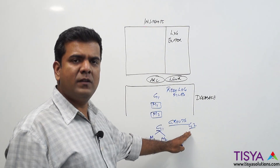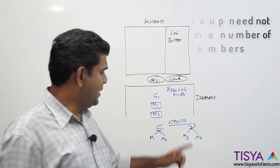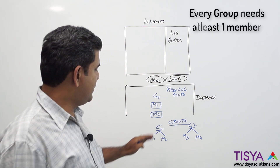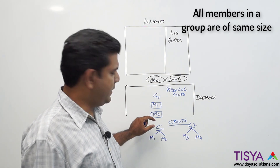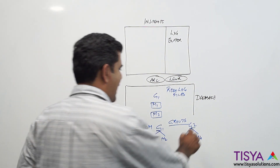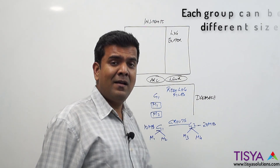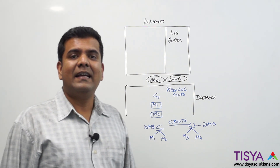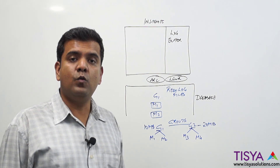Group two is also created with two members — member three and member four. It is not necessary every group needs to have the same number of members. When we have a group, all the members within the group will have the same size. For example, if I specify 10 MB, both members will be 10 MB. The idea behind having multiple members is to multiplex the redo log file, so that if one file becomes corrupted or inaccessible you have the contents in another member for recovery.